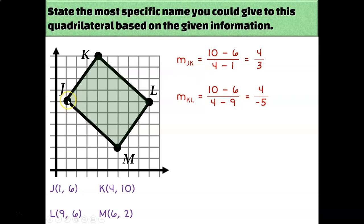KL has a slope of −4/5. Checking by counting from J to K: up 4 and to the right 3 — yes, that's 4/3. And KL: down 4 and to the right 5. These looked like they were right angles, but they're not, because they're not opposite reciprocal slopes. They're opposites in sign, but they're not reciprocals.